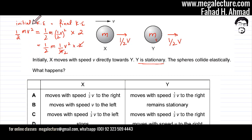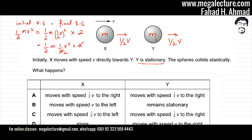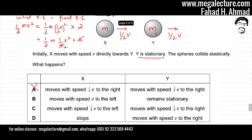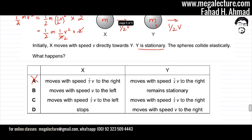This is not equal to the initial kinetic energy of half M V squared. The collision was stated to be elastic, but option A does not satisfy energy conservation. Initial and final kinetic energies are not equal, so option A is incorrect. Let's move to option B.